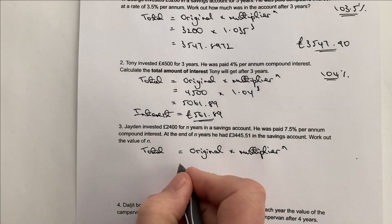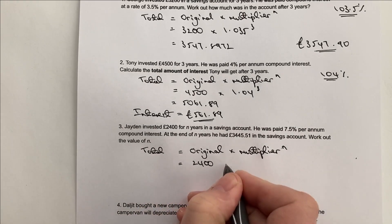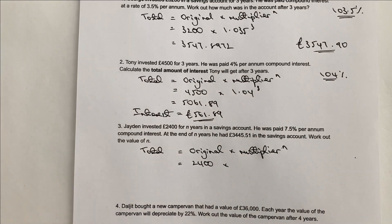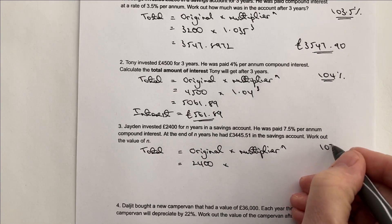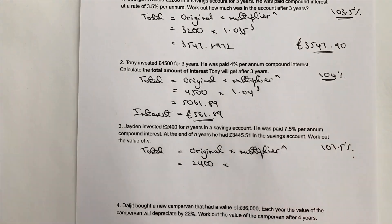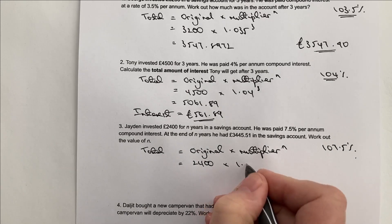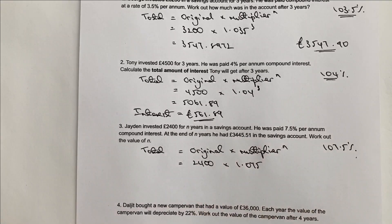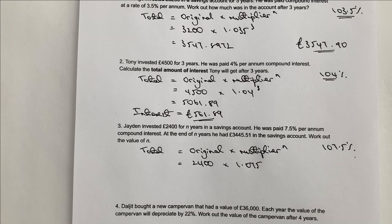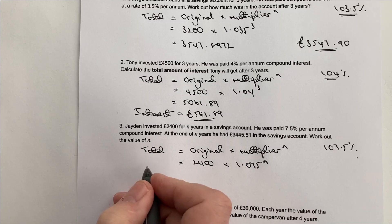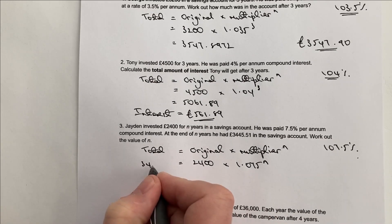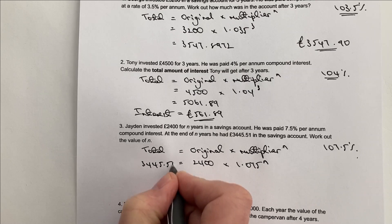The original is going to be 2,400. The multiplier — it's seven and a half percent per annum — so it's going to be 107.5%, therefore my multiplier is 1.075. Make sure you change it to the decimal equivalent. Now what we're saying is at the end of N years he's going to have a total of £3,445.51.